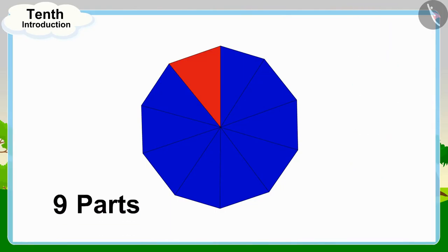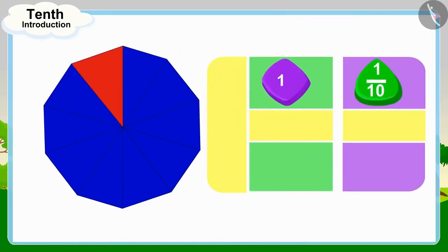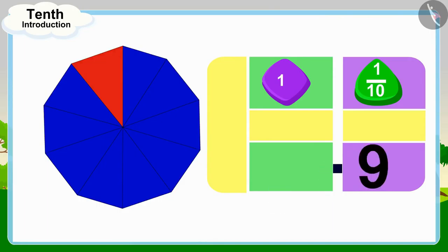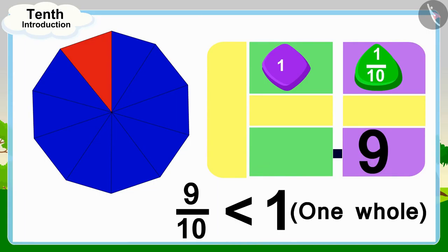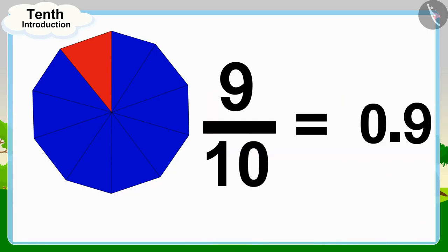Golu has colored 9 out of the 10 parts of the flower. Because our whole is divided into 10 equal parts, we will first write the decimal point. Now, Golu has colored 9 parts of this whole. Therefore, we will write the number 9 after the decimal point. And because 9 tenth is less than one whole, we will write 0 in the unit's place before the decimal point. In this way, Golu has filled blue color in 9 tenths or 0.9 parts of the flower.